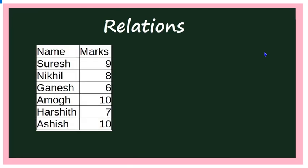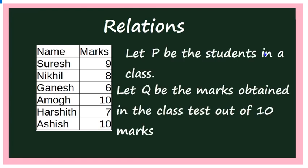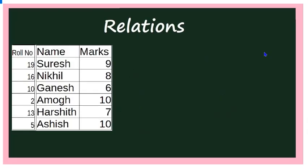Here there is a list of students who scored 6 and more marks out of 10 marks. Instead of taking the students' names, let us take the row numbers of the students. Let them be 19, 16, 10, 2, 13, and 5. We have the marks, and now we can map marks and row numbers like this.